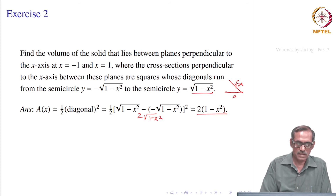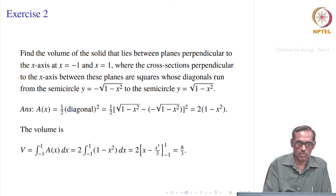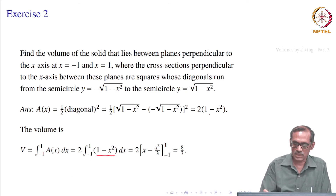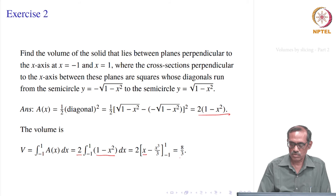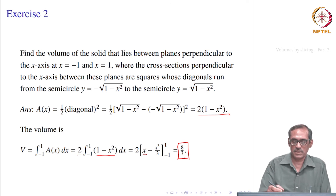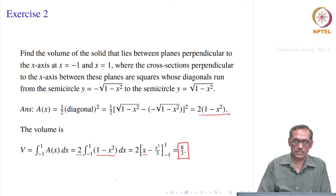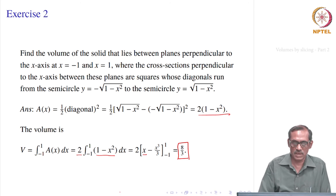So once the cross sectional area is obtained and we know the limits, the volume will be equal to the integral from minus 1 to 1 of A(x) dx, which gives 2 times the integral from -1 to 1 of (1 - x²) dx. Integrating: 1 gives x, x² gives x³/3. So it is 2 times [x - x³/3] evaluated at 1 and minus 1 and subtracted. That simplifies to 8/3. The problem itself simplified things for us — we just identified the diagonal of the square cross section directly from the given information.